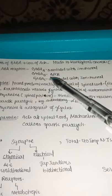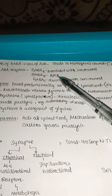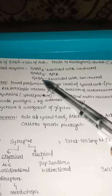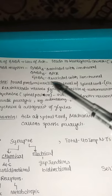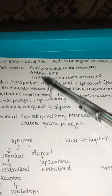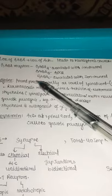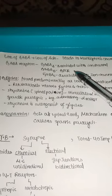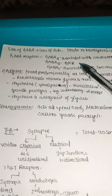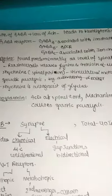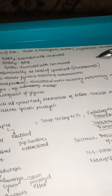GABA receptors: GABA-A is associated with an ion channel, GABA-B is a G-protein coupled receptor, and GABA-C is also associated with an ion channel. Remember: both A and C are ion channels; only B is a G-protein coupled receptor.